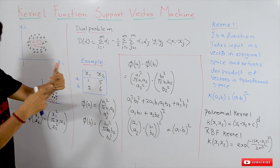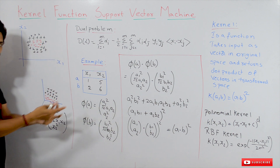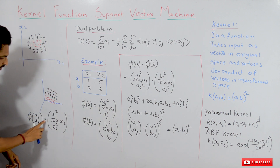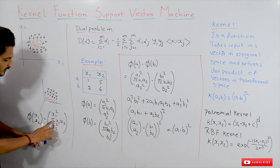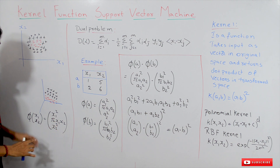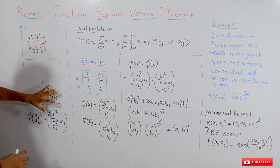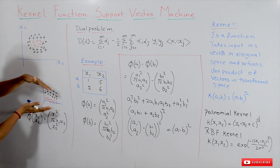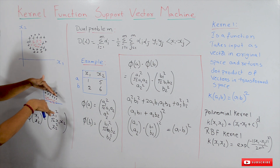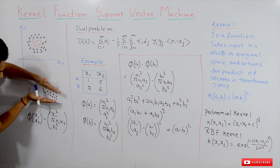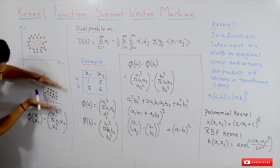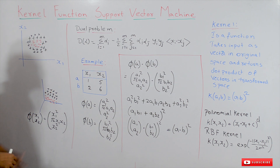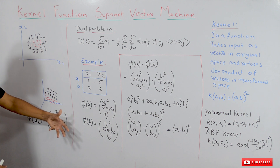What we used is a function: phi of (x1, x2) is equal to (x1 squared, square root of 2 times x1 x2, x2 squared). When we transform this data into a three-dimensional coordinate system, this is the data set we get. Now if we apply support vector machine, we can separate this data linearly — that's the benefit of transforming our data into a higher dimension.